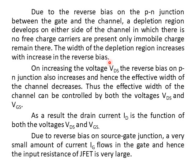As the magnitude of reverse bias VGS increases, the thickness and width of the depletion region also increases on both sides. On increasing the voltage VDS, the reverse bias on the PN junction also increases, and hence the effective width of the channel decreases. Thus the effective width of the channel can be controlled by both the voltages VDS and VGS.